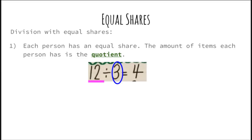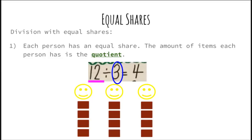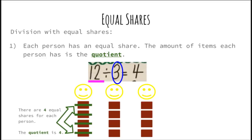Each person has an equal share. The amount of items each person has is the quotient. 12 divided by 3 equals 4. The 3 is your divisor, your 12 is your dividend, and 4 is your quotient. You are sharing 12 brownies with 3 people, and your quotient is 4. Each person got 4 brownies — there are 4 equal shares for each person, so the quotient is 4.